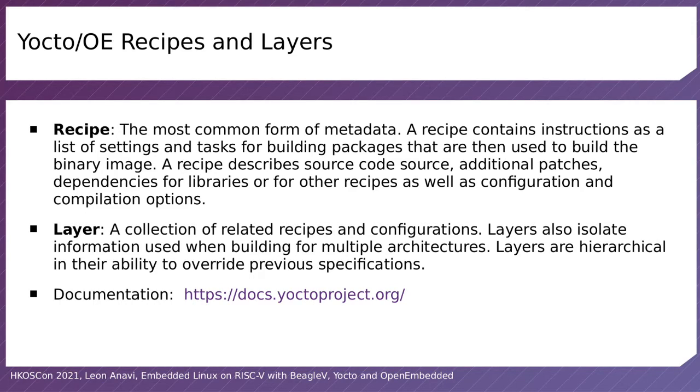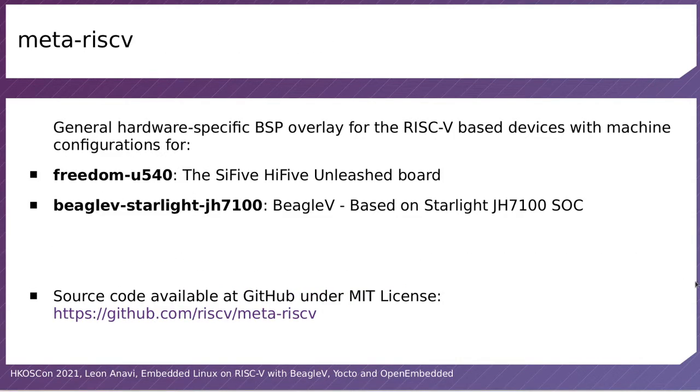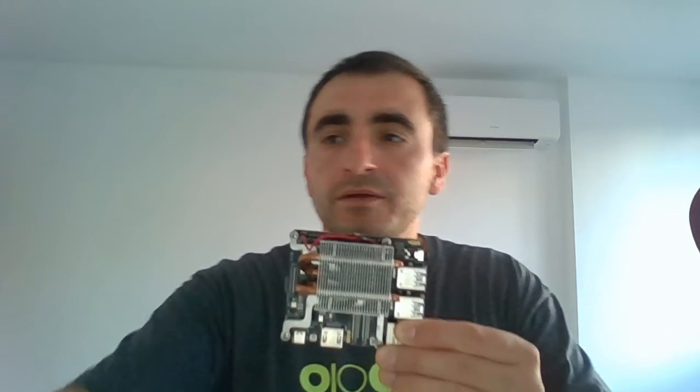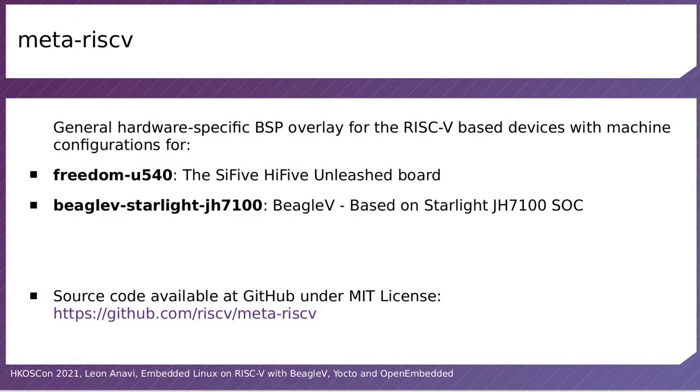The Yocto project has very good documentation available at docs.yoctoproject.org. In order to use a specific board like BeagleV-5, we need a board support package. In the Yocto and OpenEmbedded ecosystem, the board support package comes as a layer containing recipes for building the kernel, the bootloader, and some specific configurations. The layer we are going to use for BeagleV-5 is called Meta RISC-V.